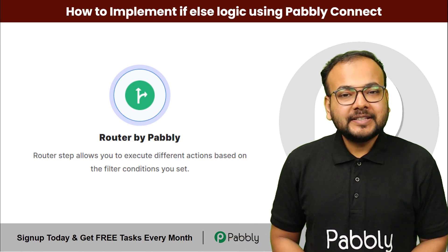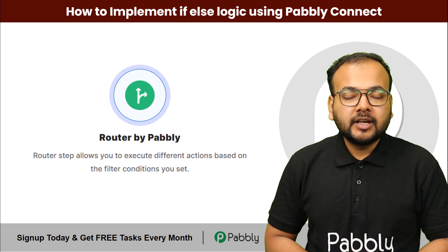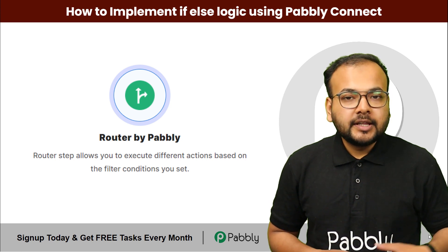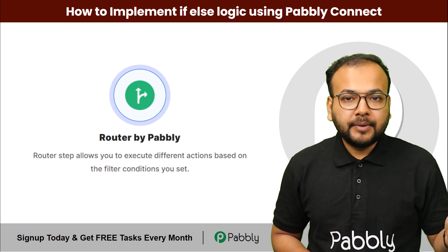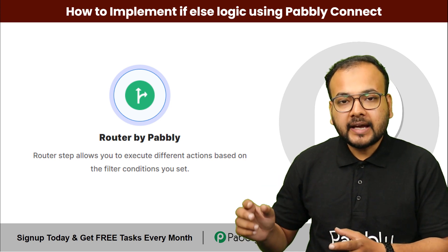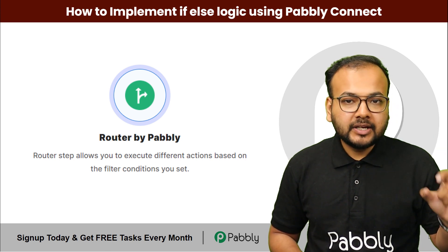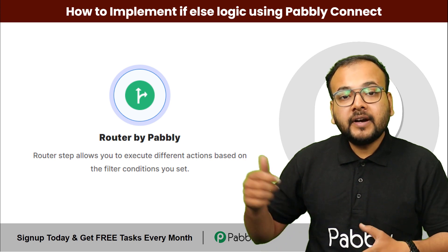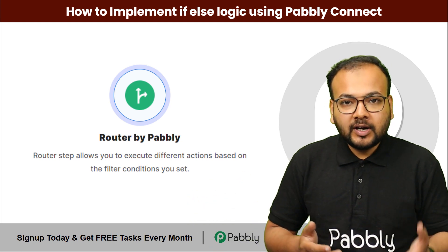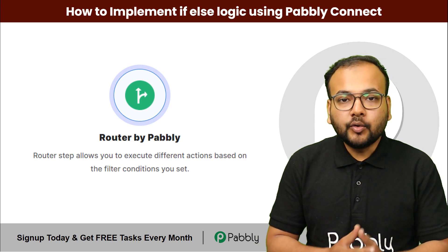Hey guys, welcome back. In this video I'm going to discuss one of the most powerful features of Pabbly Connect, which can implement if-else logic conditions inside your automation workflows. This means that when one thing happens in one application the workflow triggers and performs a specific action, but if another thing happens in the same trigger application the workflow performs a different action. This is called an if-else logic condition and you can apply this using the router feature of Pabbly Connect.